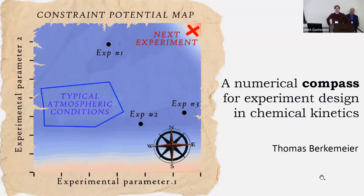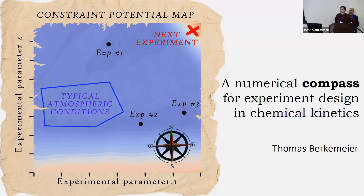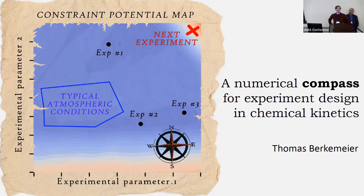Thomas Beckmeyer, group leader at the Max Planck Institute for Chemistry, invites everyone to a poster on Bayesian optimal experimental design. A PhD student, Matteo Kuga, designed an algorithm that finds the best conditions for the next experiment, creating a 'treasure map' for navigating experimental parameter space. This is challenging because laboratory conditions can differ substantially from atmospheric conditions. The algorithm uses Julia as a programming language. Come to the poster to learn why the X of the treasure map is in the top right corner.